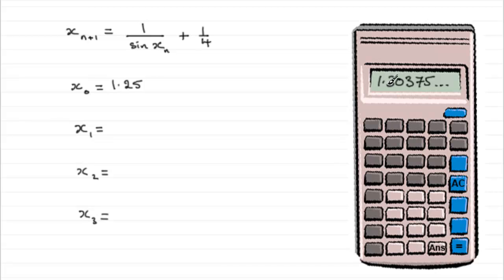Well, if we've got to give this to four decimal places, then this is clearly going to be 1.3038 to 4dp.